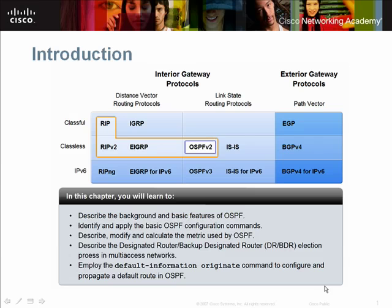OSPF is a link-state routing protocol that was developed as a replacement for the distance vector routing protocol, RIP. OSPF is a classless routing protocol that uses the concept of areas for scalability. Cisco's IOS uses bandwidth as the cost metric.